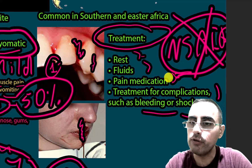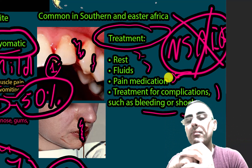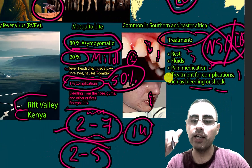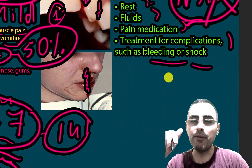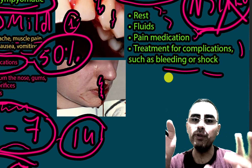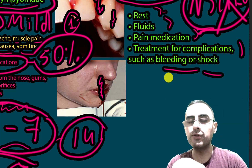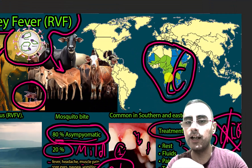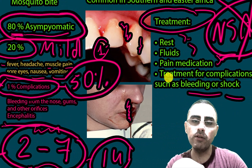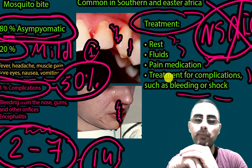You should not use aspirin, ibuprofen, or other non-steroidals because they can increase the risk of bleeding. For prevention, avoid contact with infected livestock, or any livestock at all, in areas where this infection is endemic, especially if you are traveling to that region of Africa. You should also avoid mosquito bites by wearing long sleeves and using mosquito repellents.